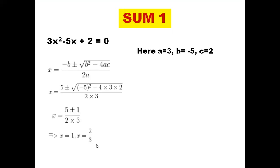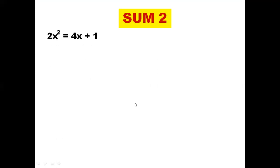So this is how we solve the quadratic equation by using the formula. You should always remember the formula. Now we come to problem 2. The equation is 2x² = 4x + 1. First we write it in standard form. We bring -4x to the left-hand side, and +1 also to the left-hand side, making it -1. So the standard form is 2x² - 4x - 1 = 0.